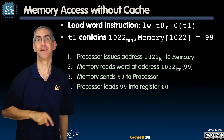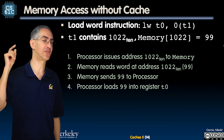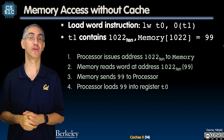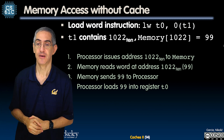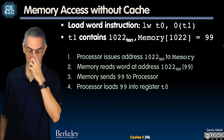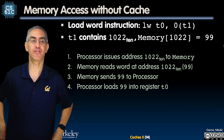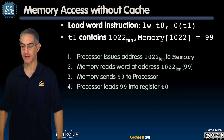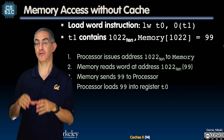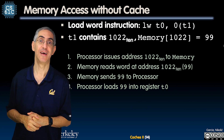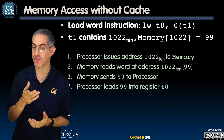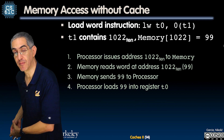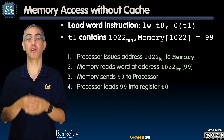Without a cache: I want to load a word. T1 is a pointer into memory containing 1022, and address 1022 holds 99. The processor issues address 1022 to memory — LW T0, 0(T1) — asking memory to go to address 1022 and return a word. Memory reads it and returns 99 to the processor, which loads it into the register.